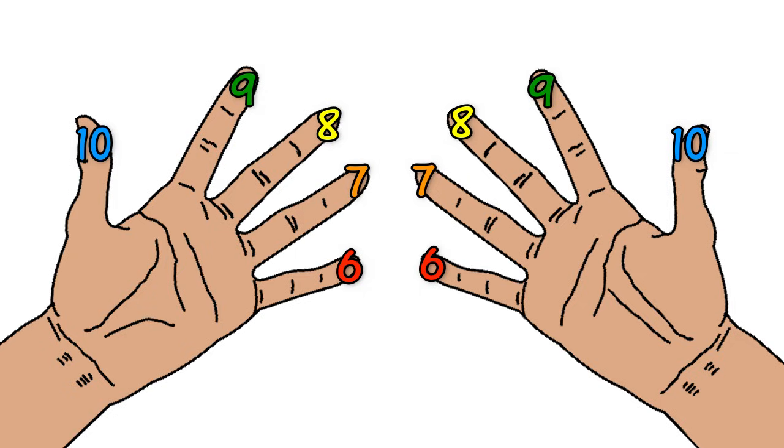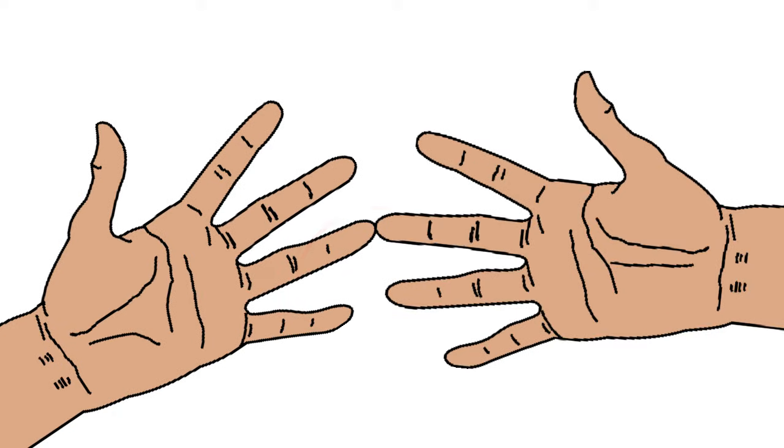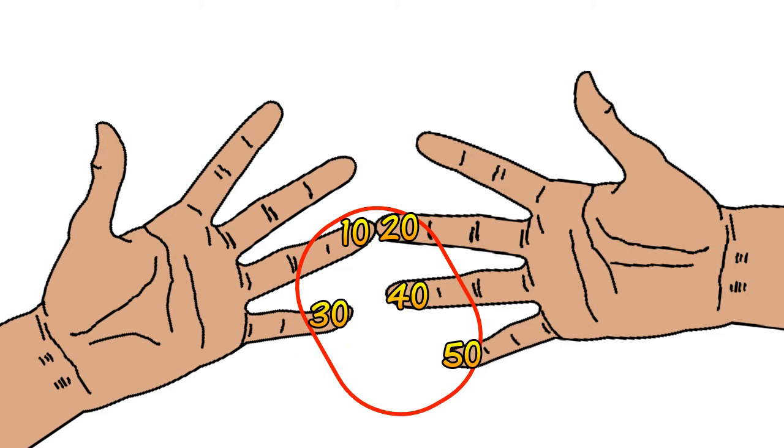Let's do another very popular calculation of 7 times 8 or 8 times 7. Again, the order doesn't matter. So 7 times 8, you get your 7th finger. Then you find your 8th finger and you join them. So counting all the fingers including the join and below in tens. We have 10, 20, 30, 40, 50. So we keep that in mind.